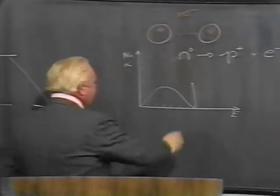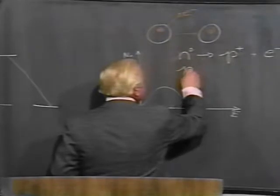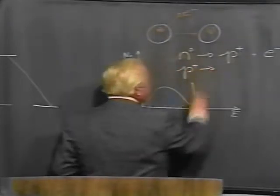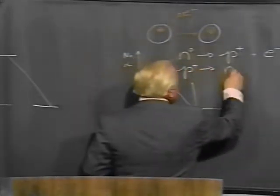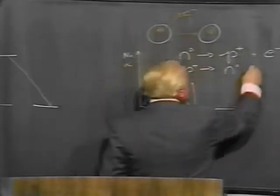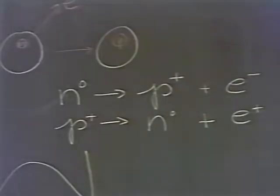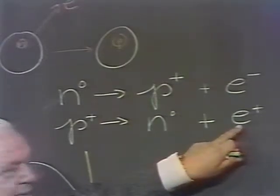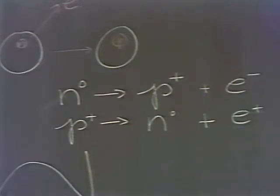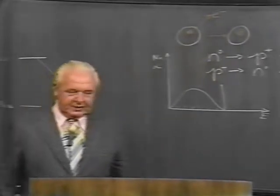Another type of beta decay which was known was the inverse of this, where the proton converts itself into a neutron and produces a positive electron. For instance, a positive proton becomes a neutral neutron plus a positive electron. And again, charge is conserved. But the energy of these electrons, the total energy of these electrons, which should lie in this line, was found to be always less than the proper amount.